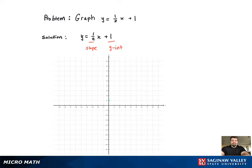So we can start by putting the y-intercept point on there, then using the slope we'll rise 1, run 2. Now we have two points. Connect the dots, there's the line, graph's complete.